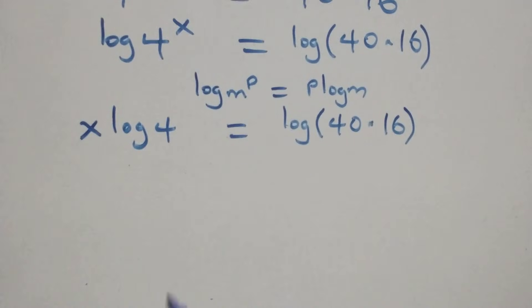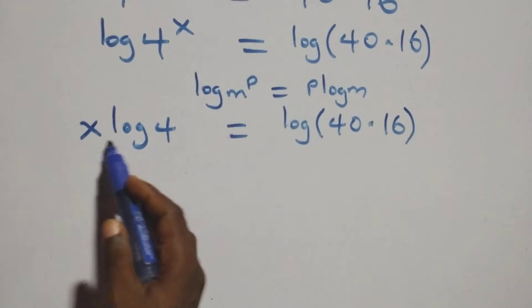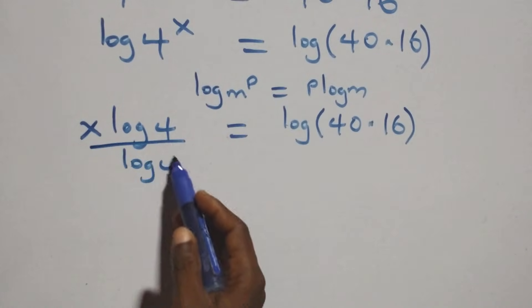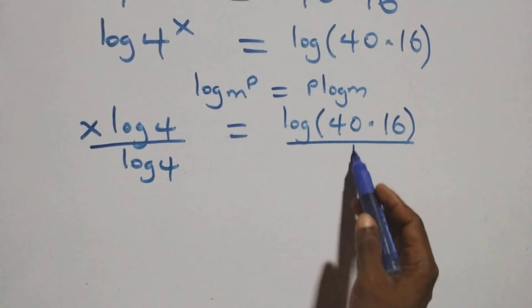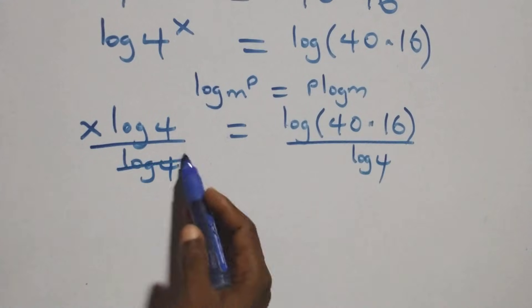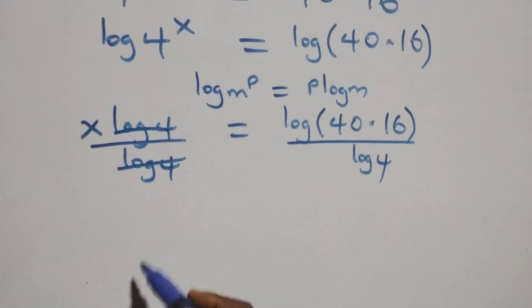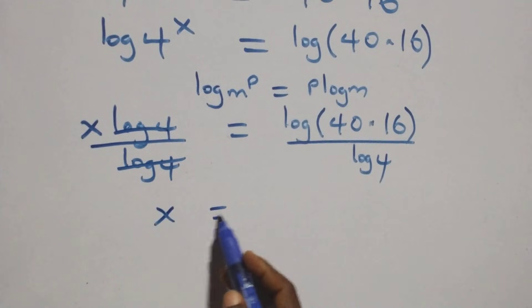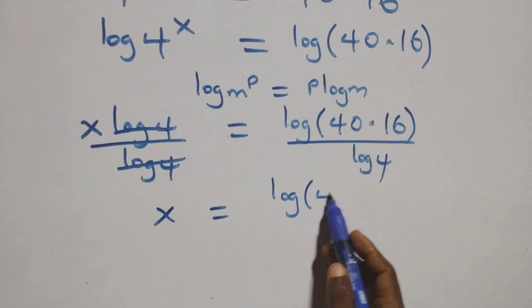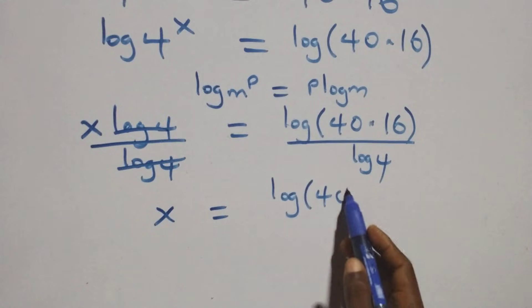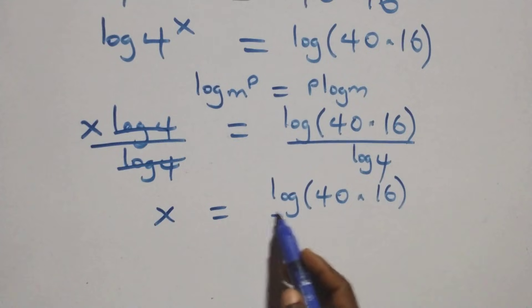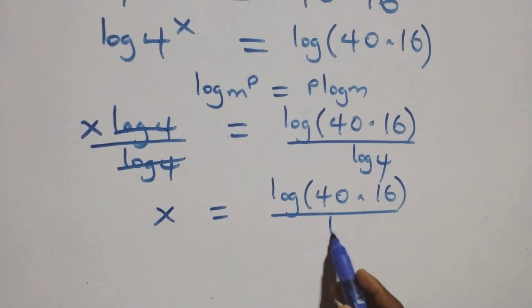Then we divide both sides by log 4: dividing this side by log 4 and also dividing the other side by log 4. This gives us x equals log(40 times 16) over log 4.